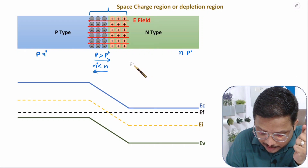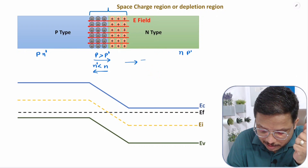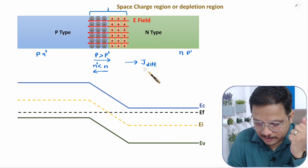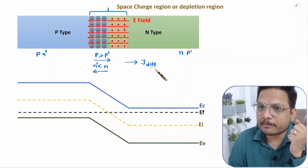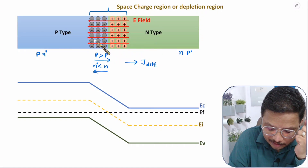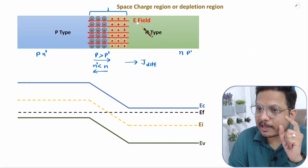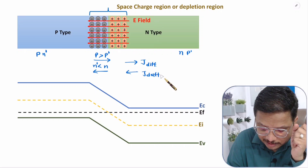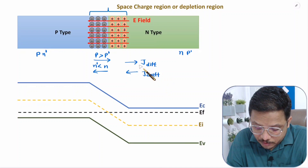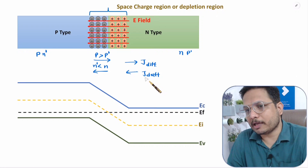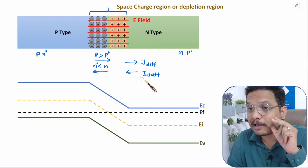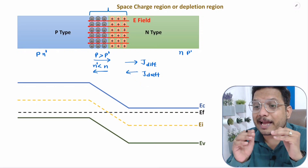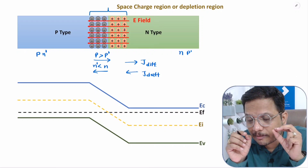Diffusion current direction is there in this direction. Then we are saying there is no flow of current. Diffusion current is happening, but along with that, if you observe, we are having electric field, and because of the electric field there will be drift current in the opposite direction. This diffusion current and drift current are both equal, so they cancel each other, and therefore there is no net current flow in this P-N junction.